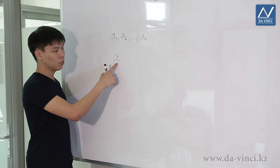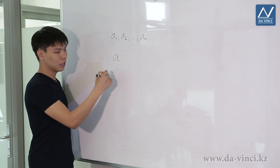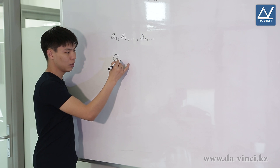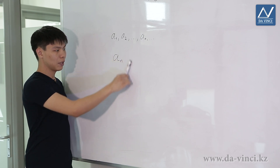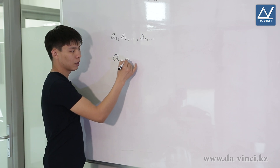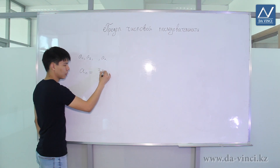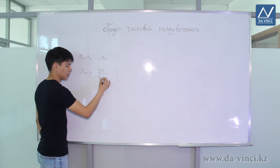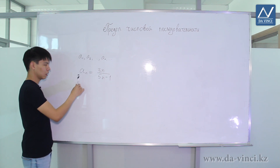We used to write the argument of the function in brackets, but in a numerical sequence this argument is written below. For example, the sequence aN defined by the formula 3N divided by 5N minus 1.